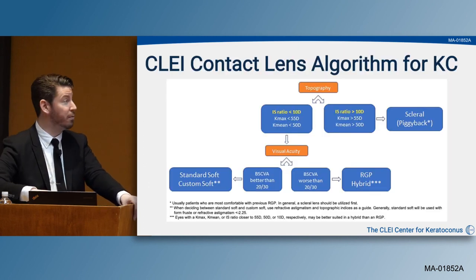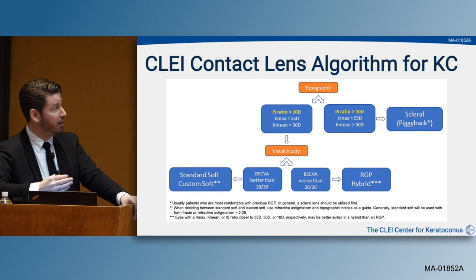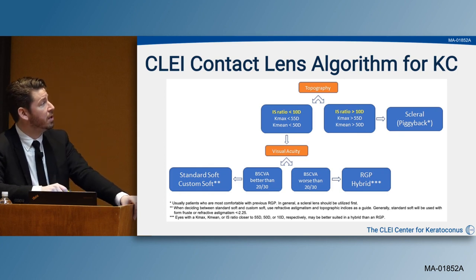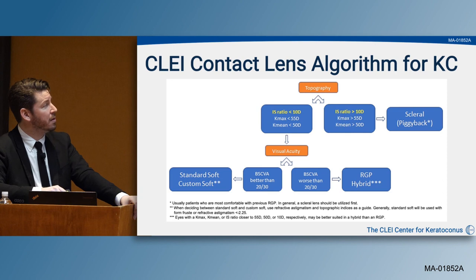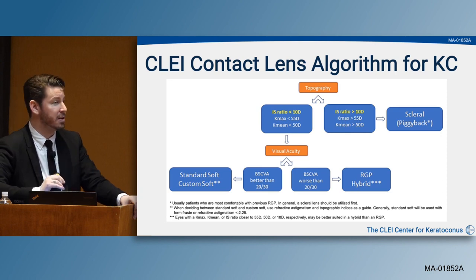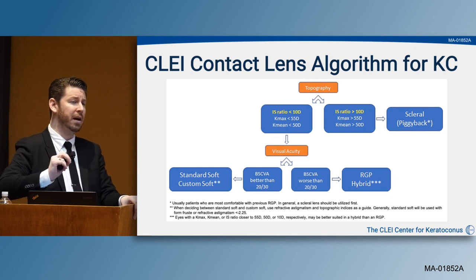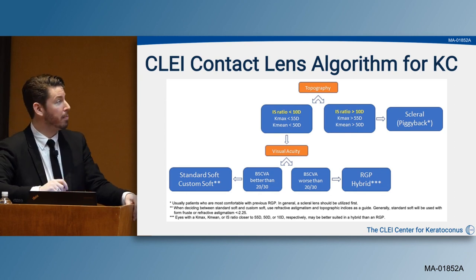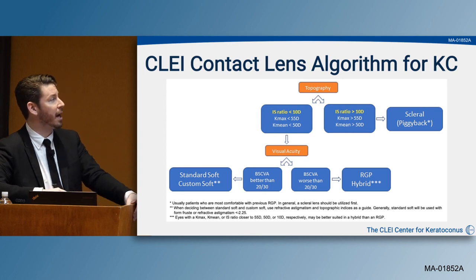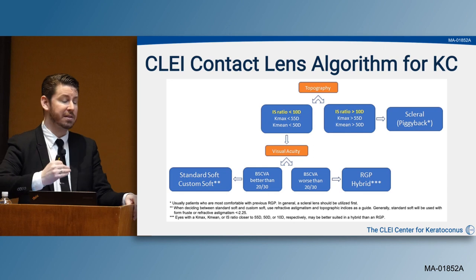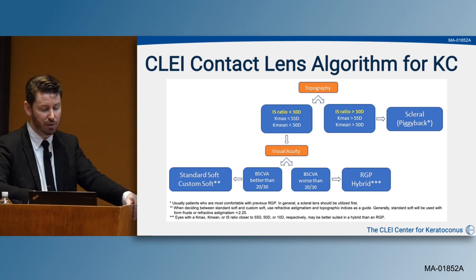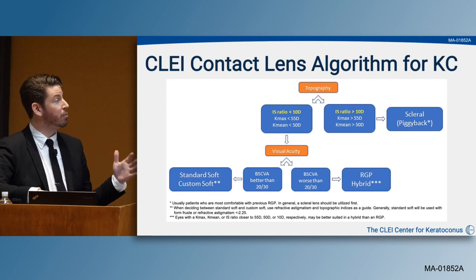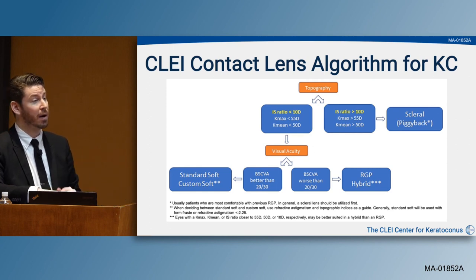At CLEI, a retrospective review of keratoconic patients yielded a pre-publication fitting algorithm. An IS value greater than 10 diopters, a K-max greater than 55 diopters, or a K-mean greater than 50 diopters suggests scleral piggyback lenses. Below those metrics, best-corrected spectacle visual acuity better or worse than 20/30 guides whether to use standard soft, custom soft, RGP, or hybrid lenses.